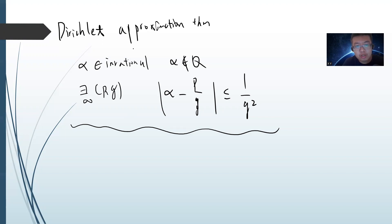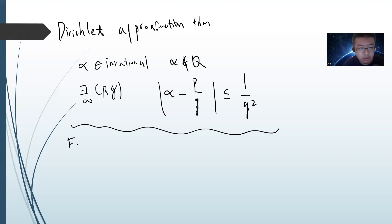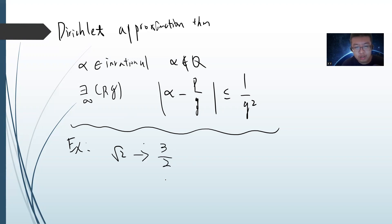So basically this Dirichlet approximation theorem says that given an irrational number, you can always use rational p/q to approximate it. The standard example is the square root of 2. The first approximation is 3/2, and you can easily see this comes from Pell's equation: 2² - 3 = ... actually, 3² - 2×2² = 1.